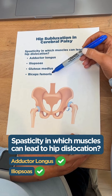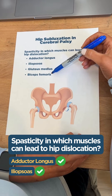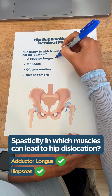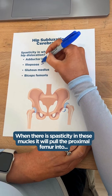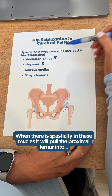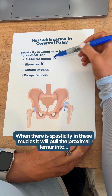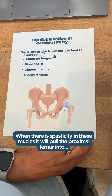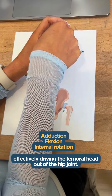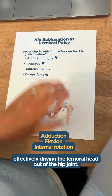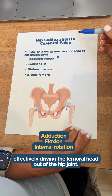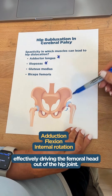The answer here is the adductors and hip flexors. When there is spasticity in these muscles, they'll pull the proximal femur into adduction, flexion, and internal rotation, effectively driving that femoral head right out of the hip joint.